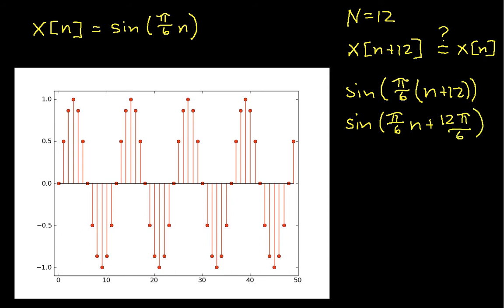This becomes sin(π/6*n + 12*π/6). We immediately see that this term here is just 2π. And because sine is periodic with period 2π, I can add 2π to its argument here and not change the value of the sine. So in this case, this is equal to sin(π/6*n), which is x[n], which indeed means that this is periodic.